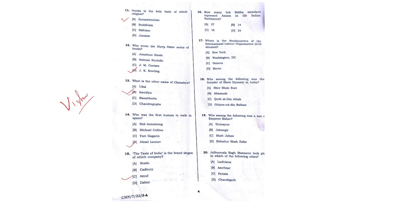Question number 60: How many Lok Sabha members represent Assam in the Indian Parliament? The answer is option B. Where is the headquarters of the International Labour Organisation? The answer is Geneva. Who among the following was the founder of the Slave Dynasty in India? The answer is option C.